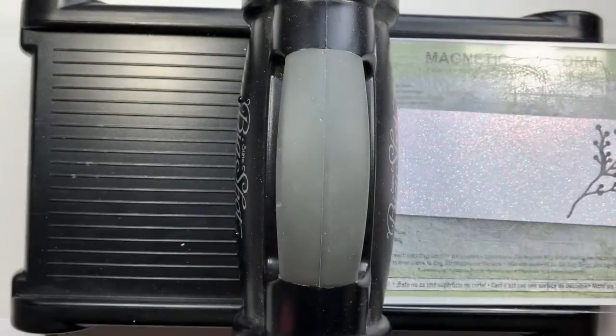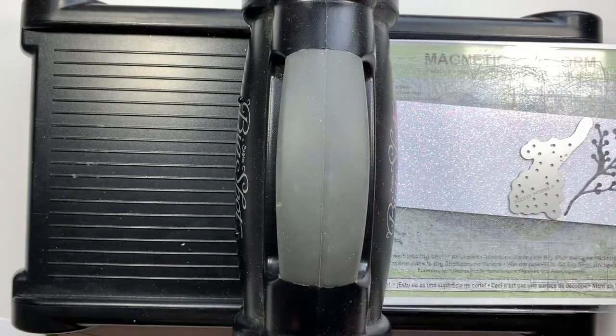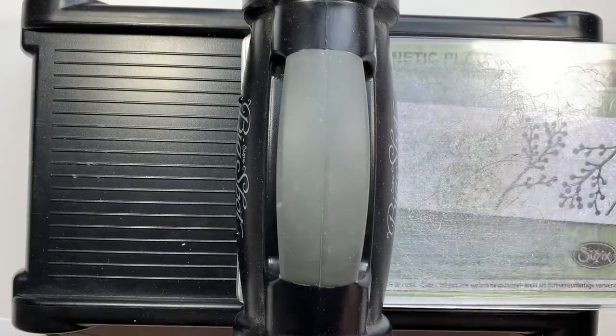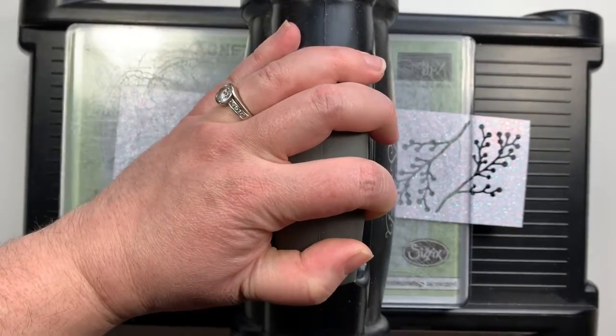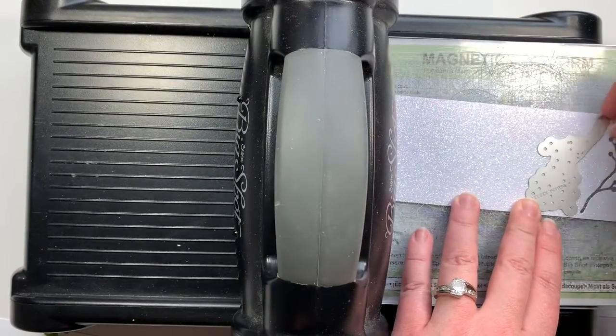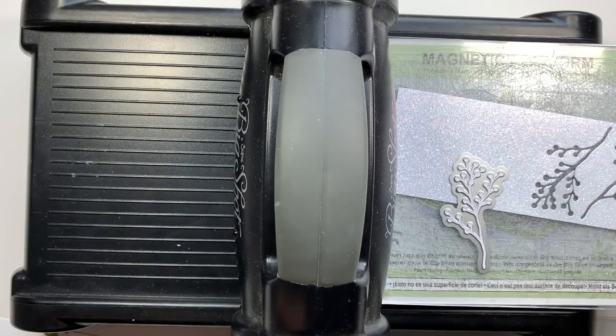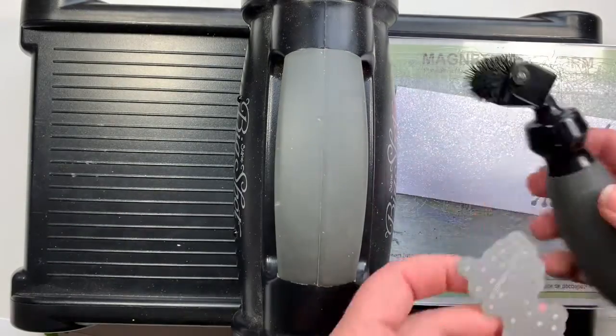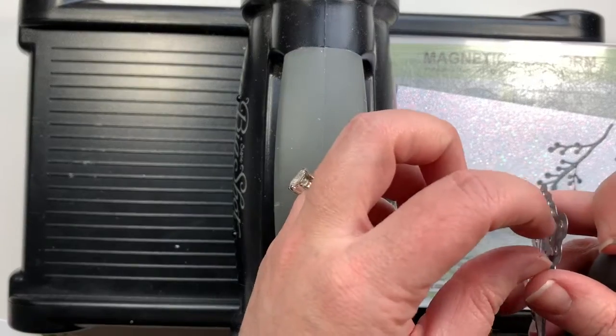And now it is Big Shot time. I have some of our Glimmer paper here that I'm going to cut this little twig with berries. You're going to need one of these per card. I'm only showing you one that I've cut out. I'm going to skip the second one on camera. And I'm going to use my die brush to help me loosen that from the die and it comes out really nice and easy that way.